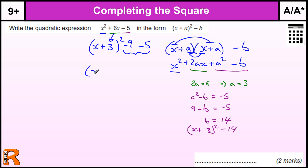Then all we've got to do is combine those two to get the overall form, which is x plus 3 all squared minus 14, which is what we have down there.